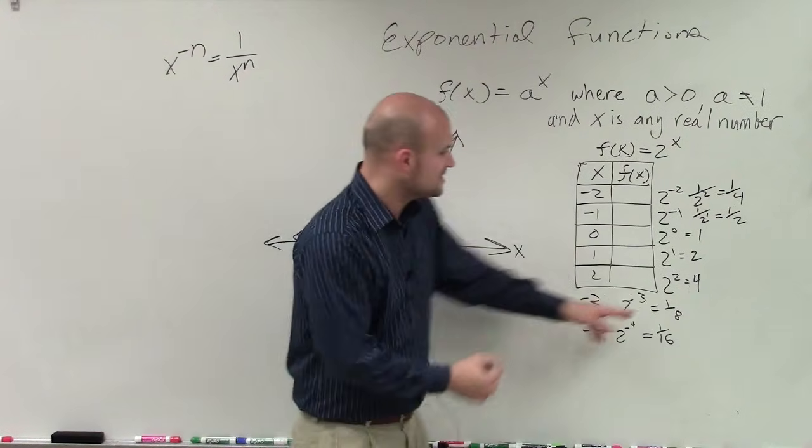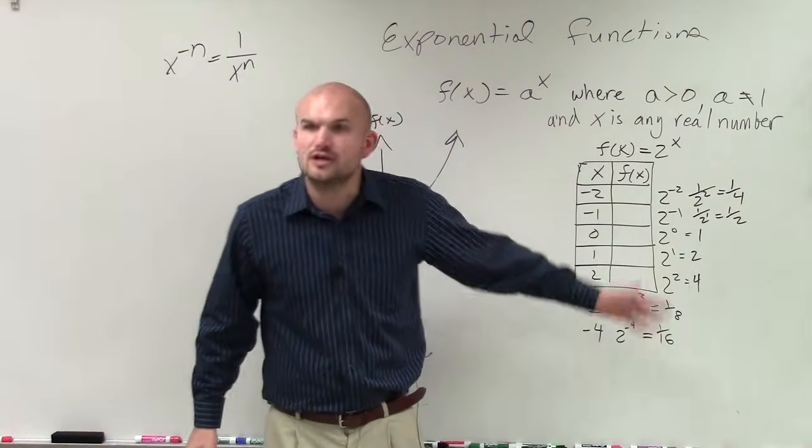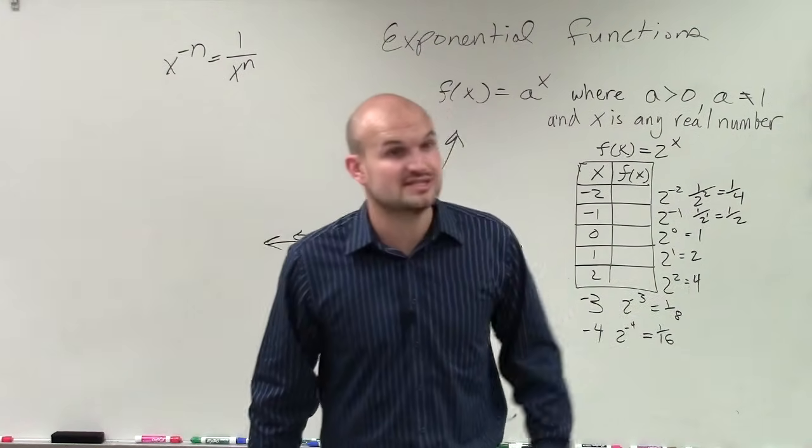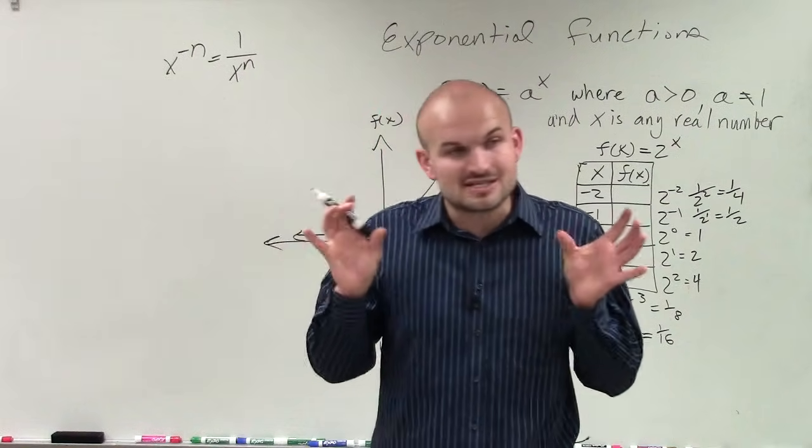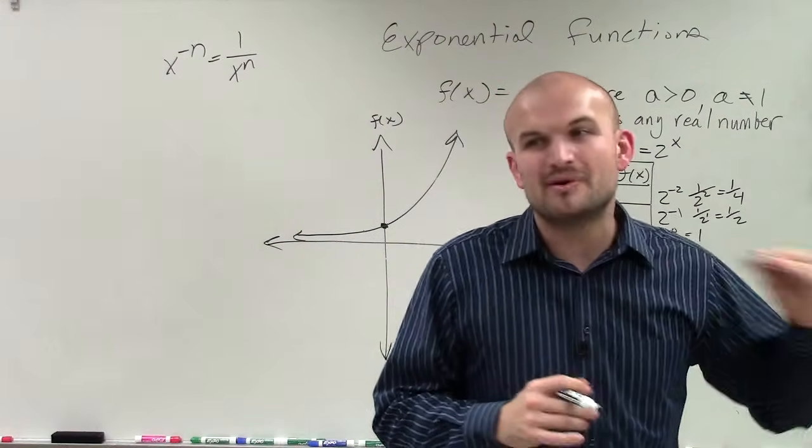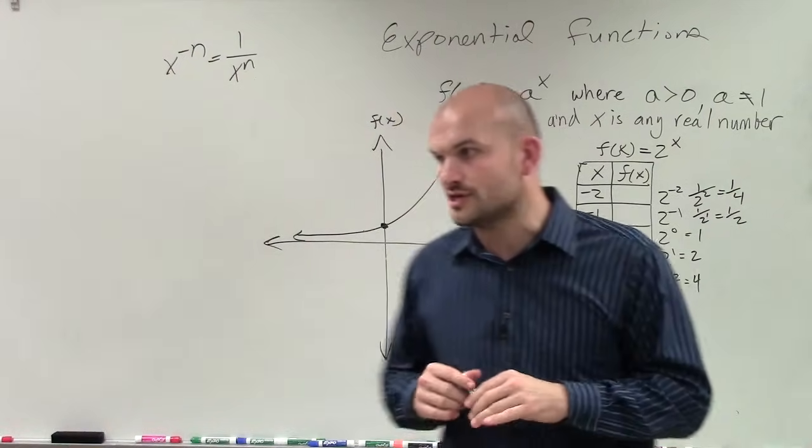It's going to keep on approaching 0. If you keep on plugging this in, do 1 over 8, do 1 over 16, do 1 over 32, do 1 over 64. That number keeps on getting smaller and smaller and approaching 0, but it's never going to approach 0.